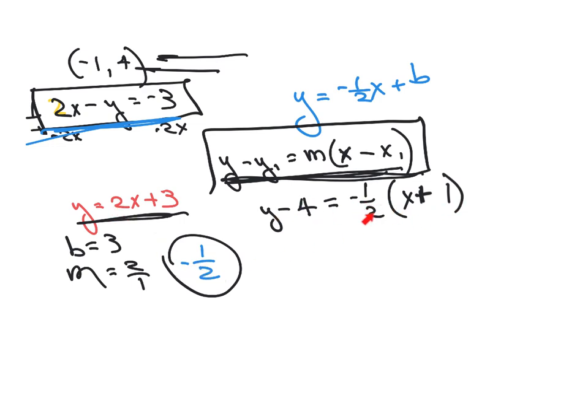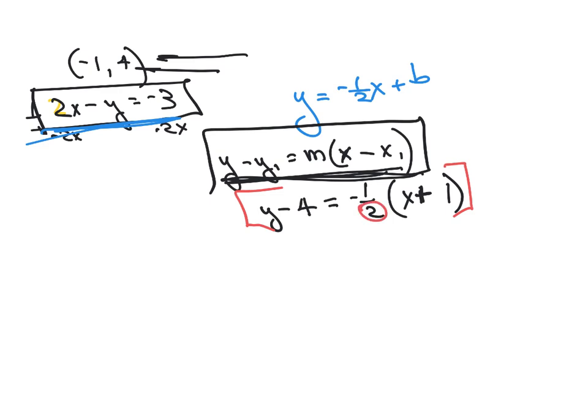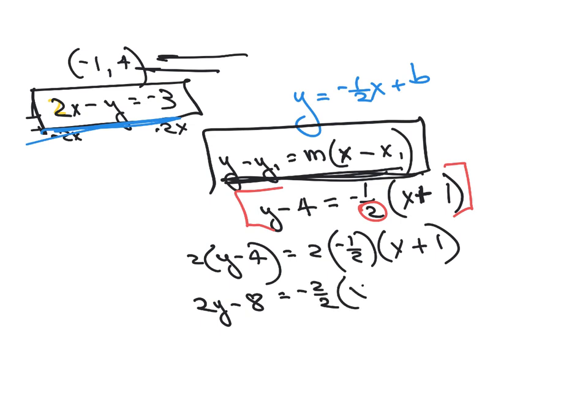So what I did is I just plugged in the negative one here, the 4 here, the negative one-half here, because it's perpendicular, so it's no longer 2. It's negative one-half. So now I'm going to multiply things across, but first of all, I'm going to go ahead and put it in standard form. Well, I have a fraction. Remember, I told you to get rid of the fraction. That would give a standard form, so I'm going to multiply absolutely everything by 2.